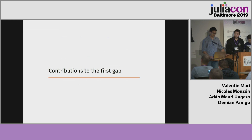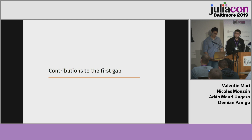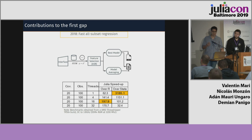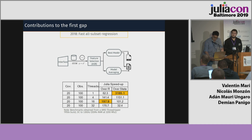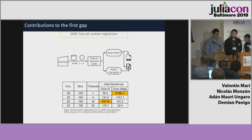In order to close the first gap, we built a new Julia package merging machine learning and econometric capabilities. Last year, we presented the first step of this package — a fast all-subset regression algorithm that finds the best model among all possible covariate combinations and obtains a measure of coefficient uncertainty among model specifications. After many refinements, it is running up to 3,200 times faster than Stata and R, respectively.